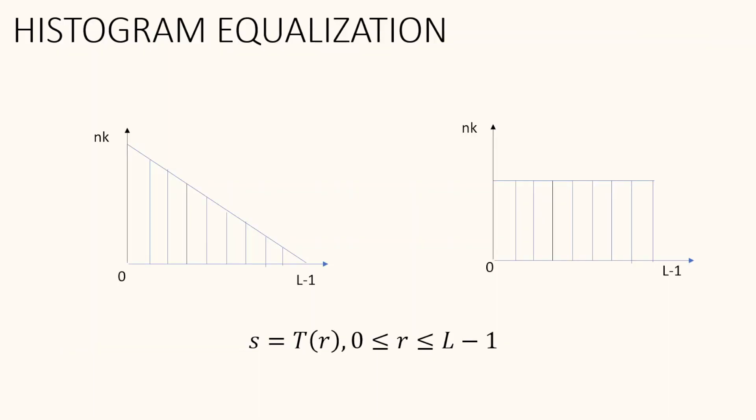Consider this example, where the first image shows the histogram of an input image. We can see that the histogram plots towards lower intensity level and hence it is a dark image. If we perform histogram equalization on this image, the output image will appear as shown in the diagram to the right. Here you can notice that the histogram is uniformly distributed across the range 0 to L-1. In order to transform the original dark image to a normally distributed image, we have to apply a transformation function.